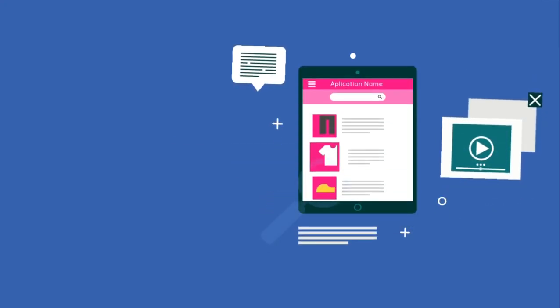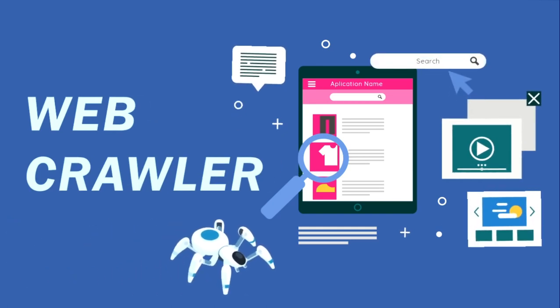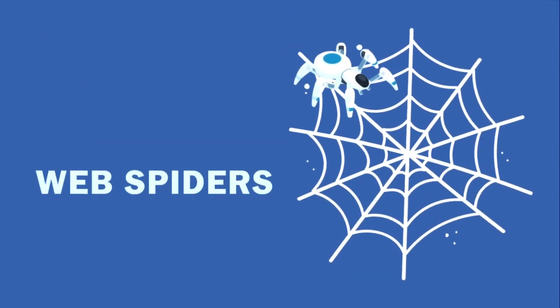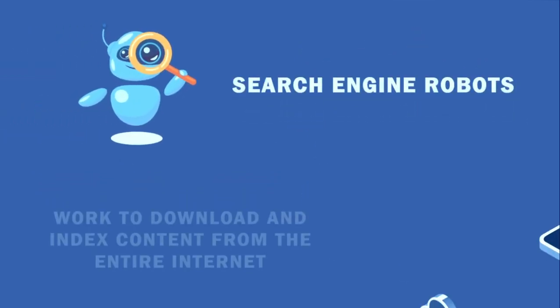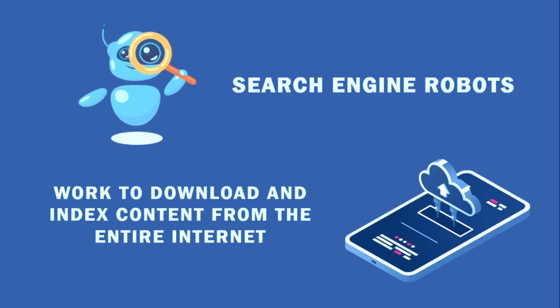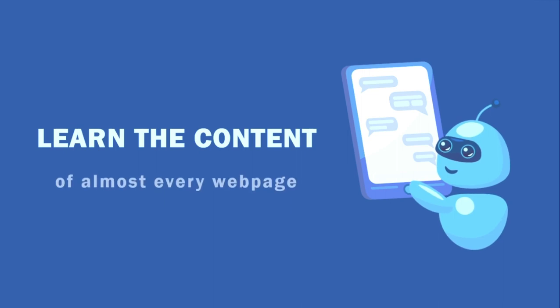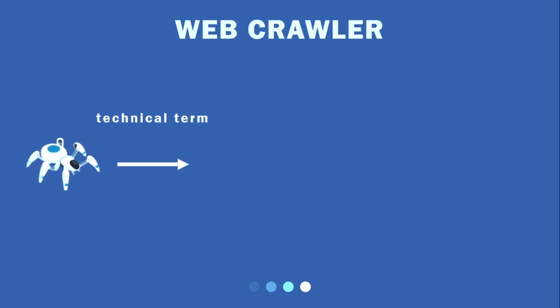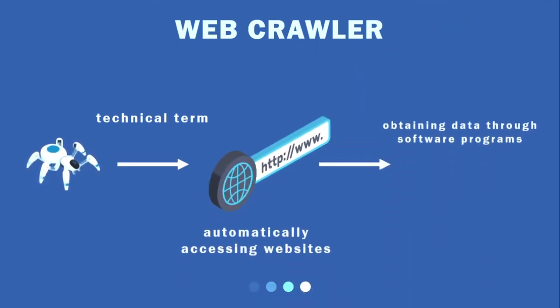Hello everyone and welcome. Today we are going to talk about what a web crawler is and how it is different from a web scraper. What is a web crawler? Web crawlers, also called web spiders or search engine robots, work to download and index content from the entire internet. The goal of this robot is to learn the content of almost every web page on the web so that relevant information can be retrieved when needed. These robots are called web crawlers because crawling is a technical term for automatically accessing websites or obtaining data through software programs.